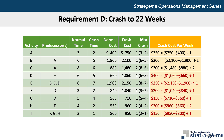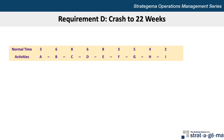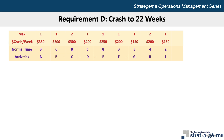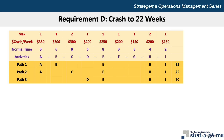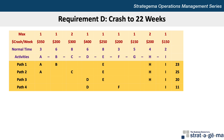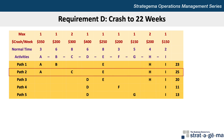Now that we know by how many weeks each activity can be crashed and at what cost, we can proceed with figuring out the optimal plan to get to 22 weeks at the lowest cost. I like to set up a table when crashing so it's easy to see all the activities, times, paths, and costs. Here's each activity with their normal times, crash cost per week, and maximum crash times. All five paths are listed: path 1 A-B-E-H-I at 23 weeks, path 2 A-C-E-H-I at 25 weeks, path 3 D-E-H-I at 20 weeks, path 4 D-F-I at 11 weeks, and path 5 D-G-I at 13 weeks. Path 2 is identified as the critical path.